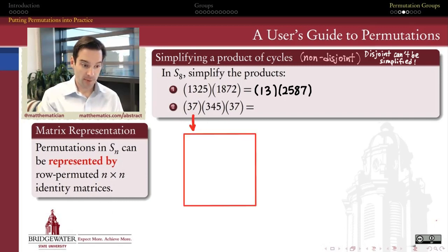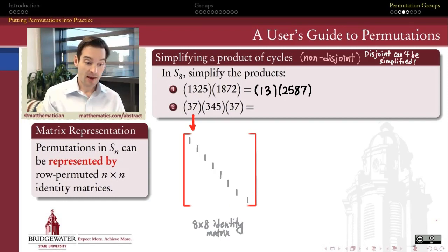For example, (3 7), that's a 2-cycle. To represent that as a matrix product, I start with an 8 by 8 identity matrix, 8 by 8 because I'm working in a set of permutations of eight symbols. And I'll just take the rows of this identity matrix and permute them according to this permutation.